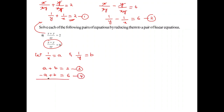Adding equations 3 and 4, the A terms cancel, giving 2B equals 8. Therefore B equals 8 by 2, so B equals 4.